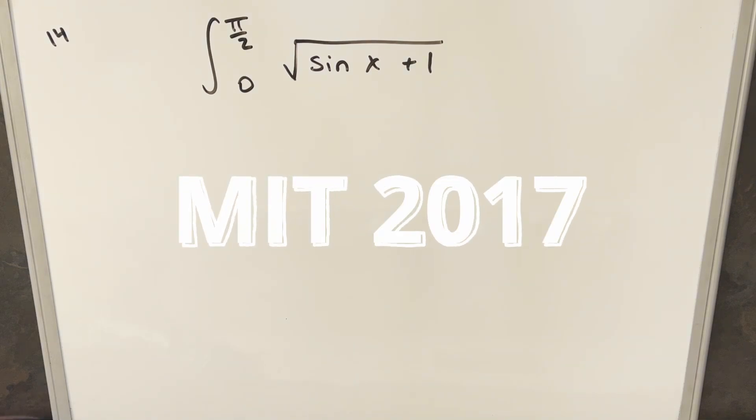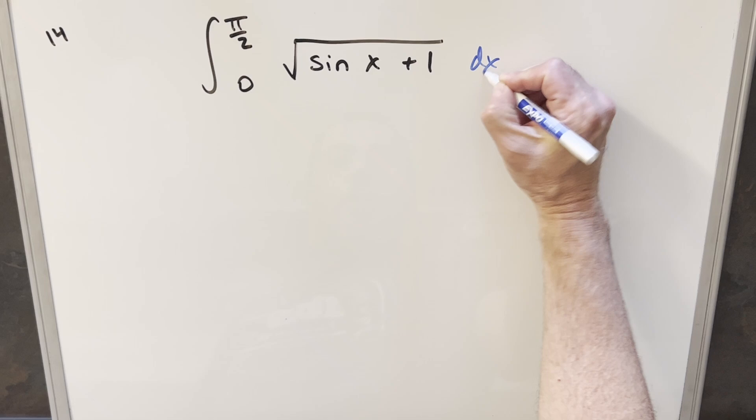Okay, we have here an integral. This one's MIT 2017, problem 14. We have the integral from 0 to pi over 2, square root sine x plus 1, and I forgot the dx.